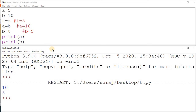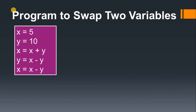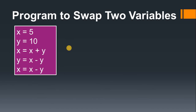There is one more logic for swapping. Sometimes you get a task where you must interchange values without using the third variable. So what do you do? In the presentation, the program to swap two variables without using the third variable uses only two variables: x is 5 and y is 10. The logic is: x equal to x plus y, y equal to x minus y, x equal to x minus y.